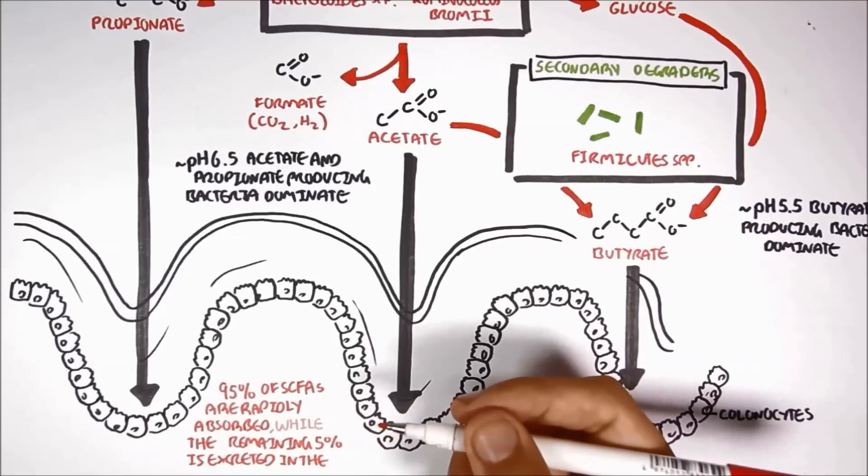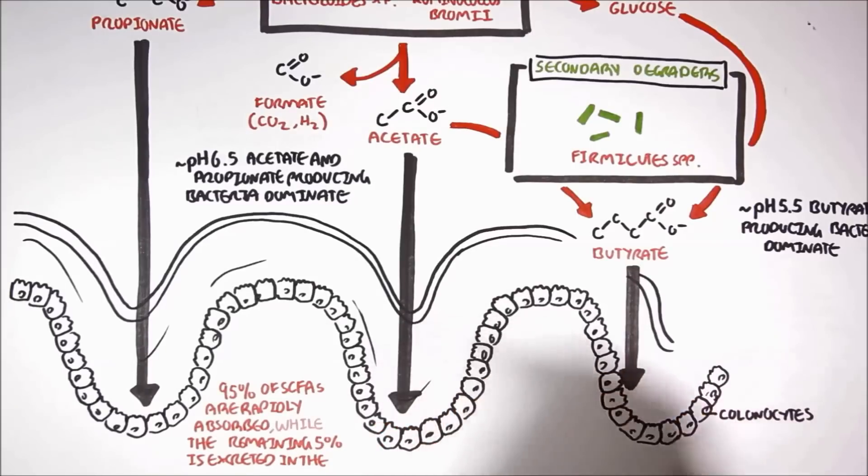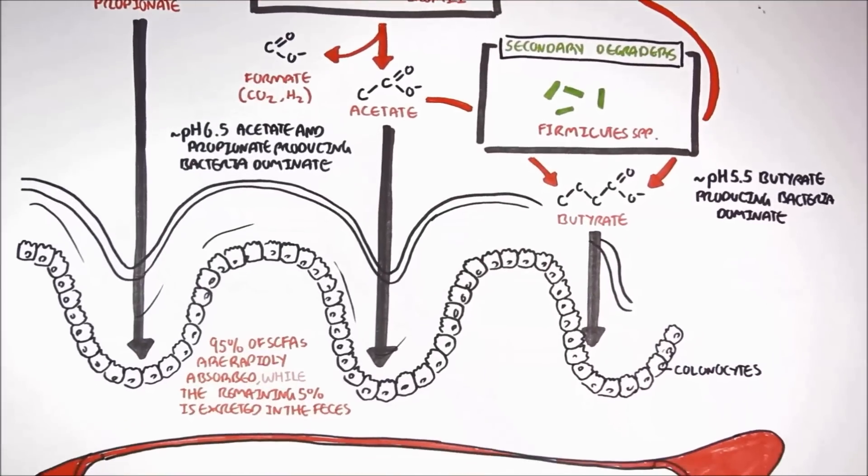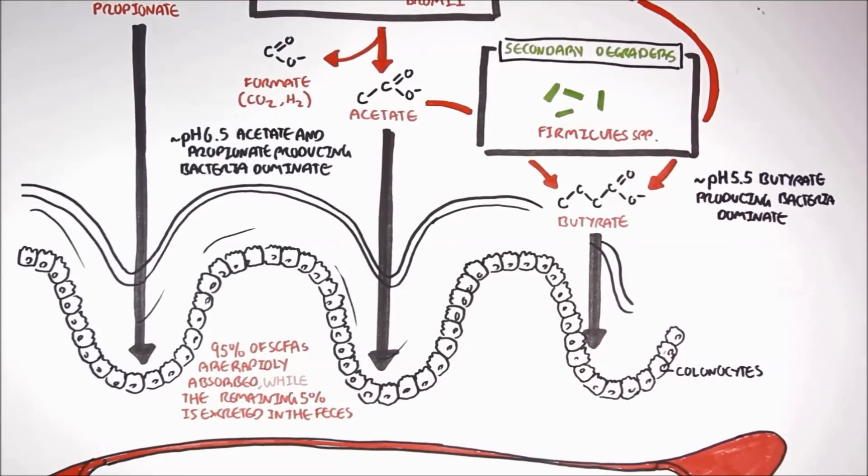After being absorbed by the colon cells, the short-chain fatty acids can enter circulation, and enter the portal vein, which is blood traveling towards the liver.